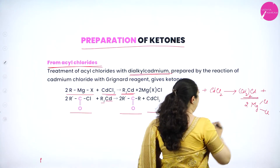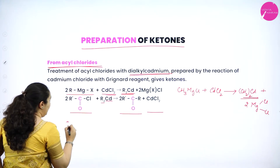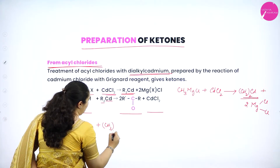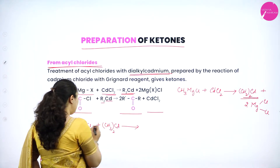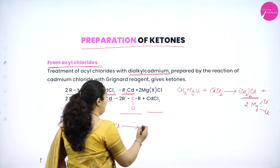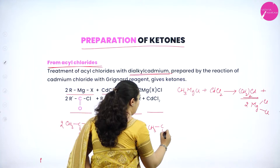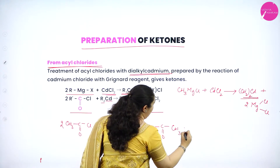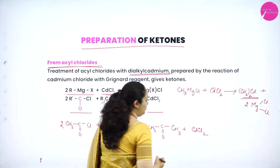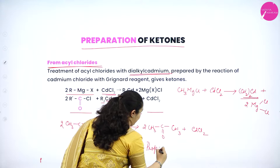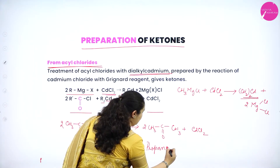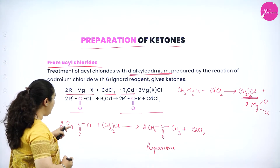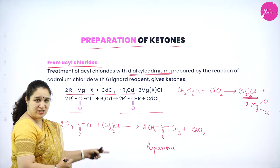Now this dialkyl cadmium reacts with acyl chloride. Taking CH3C(=O)Cl plus (CH3)2Cd, cadmium takes away the chlorine, so for two molecules of acyl chloride we get 2 CH3C(=O)CH3 plus CdCl2. The chlorine is substituted with the CH3 alkyl group, and the product is propanone. Here R and R' are both CH3.